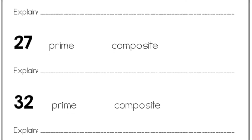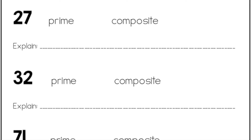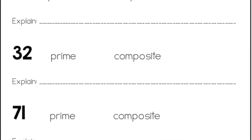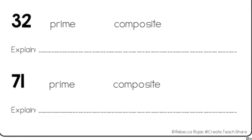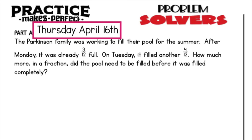Six times five is thirty, six times six is thirty-six, six times seven is forty-two, gotta know it so don't forget.